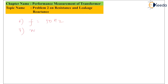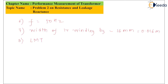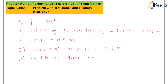The width of the LV winding, denoted BS, is equal to 16mm, which converts to 0.016 meters. The length mid-turn LMT is equal to 0.9 meters. The length of the coils, denoted LC, is equal to 0.5 meters. Also, the width of the duct between the HV and LV winding, denoted A, is equal to 15mm, which converts to 0.015 meters.